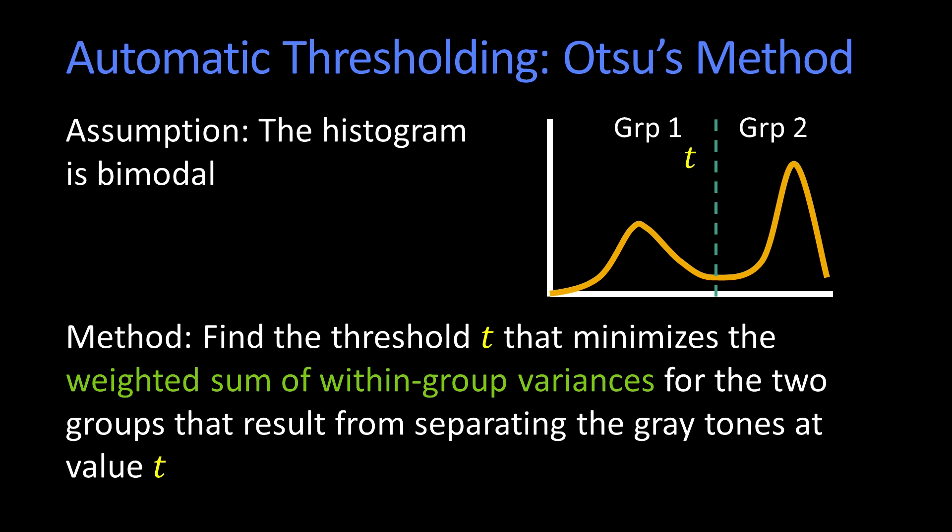A simple method, this is Otsu's method from a long time ago. It's a binary vision method. It basically says, assume that your system is bimodal, and find the cutoff that minimizes the within group variance. So you're only allowed to draw one line.